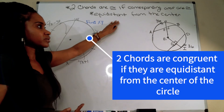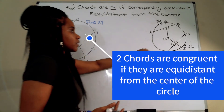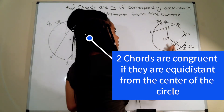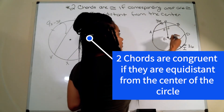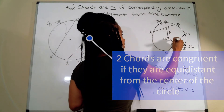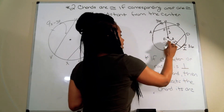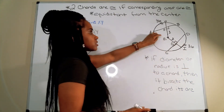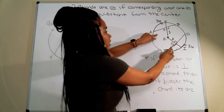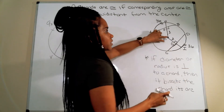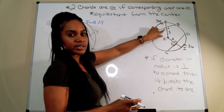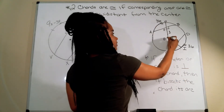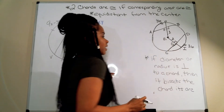Another condition: if chords are equidistant from the center, they are congruent. So if EF is 8 and EG is 8, that tells us those chords are also congruent, because they're the same distance from the center of the circle.